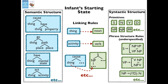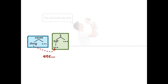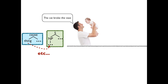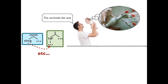Suppose the infant's father says 'the cat broke the vase.' And let's say that by this point the infant already knows what the word 'cat' means. If it so happens that the infant can guess from context that her father is talking about this really salient event that just happened in which the cat broke the vase, she's now in a position to learn something. Because the cat is the thing causing the event, from the innate linking rule she knows that 'cat' has to be the subject of this sentence.